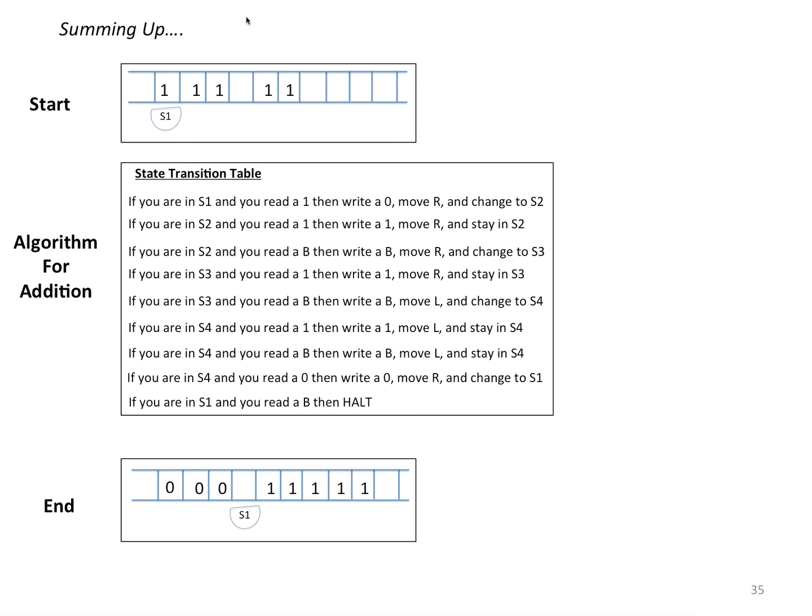You can kind of reason for yourself that it didn't matter that I had three 1s over here and two 1s over there. I could have had 100 1s over here and 1,500 1s over here. I would have gotten an output of 1,600, a quantity of 1,600 1s in the output, as long as I follow this algorithm.